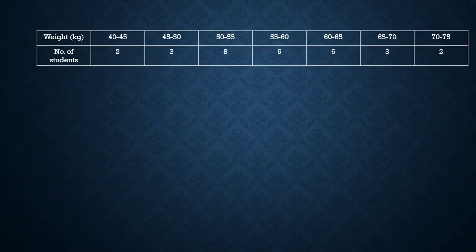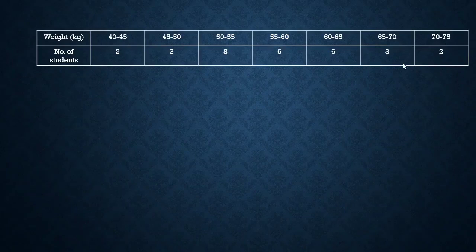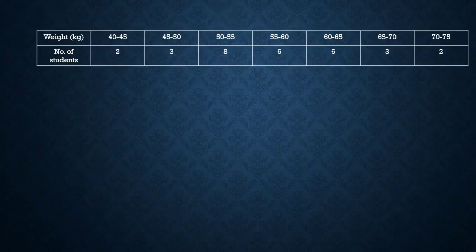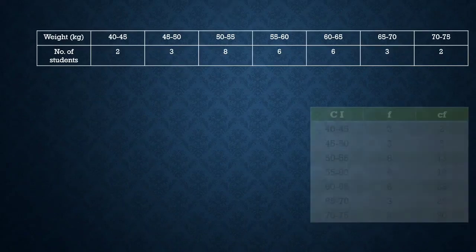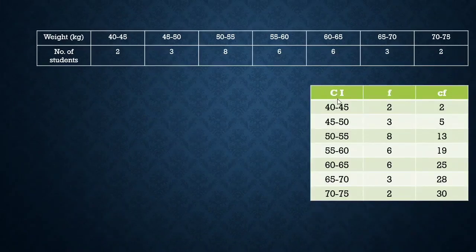In Question 7 (Question 6 is left as homework), the distribution gives weights of 30 students. Weight classes are 40–45, 45–50, 50–55, 55–60, 60–65, 65–70, 70–75 with frequencies 2, 3, 8, 6, 6, 3, 2.